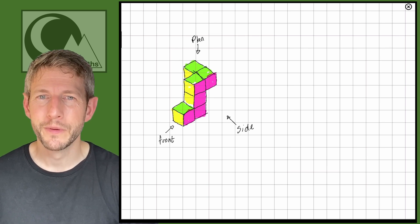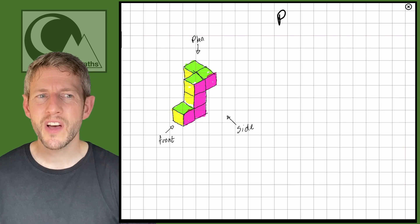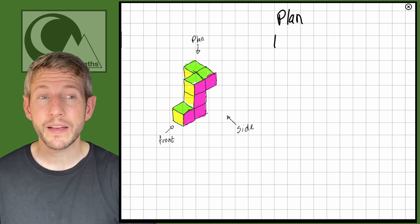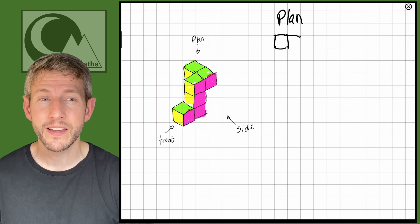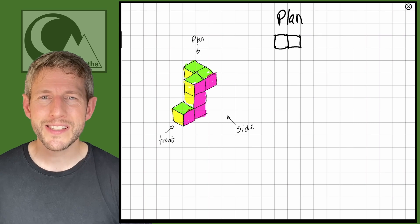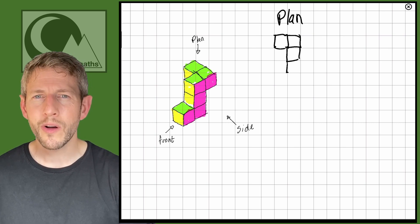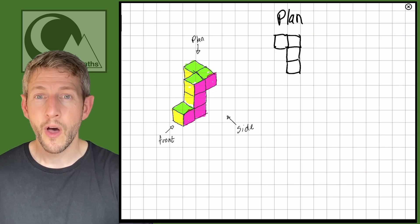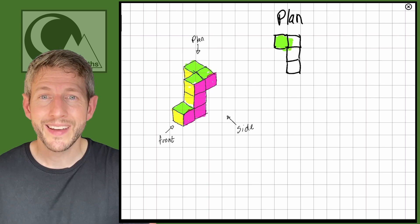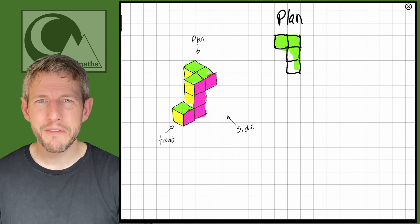Let's start with the plan view — anything that can be seen from above. Starting with the far green square at the back, there's a square attached directly to the side of it, then a square directly below that, and then another green square that from above appears directly below because they share a side. So from above, the plan view looks like four squares in the shape of a walking stick.